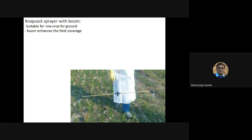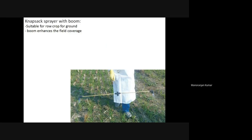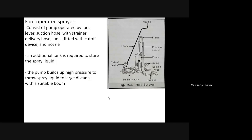The second example is the knapsack sprayer with boom. This is similar to the knapsack sprayer but with greater coverage area. Booms are fitted, and each boom has three nozzles, enhancing coverage. This type of sprayer is suitable for row crops. The boom enhances field coverage, and the working principle and mechanism are similar to the knapsack sprayer.